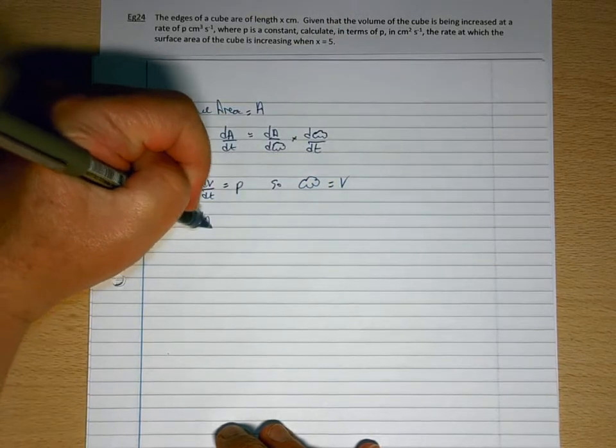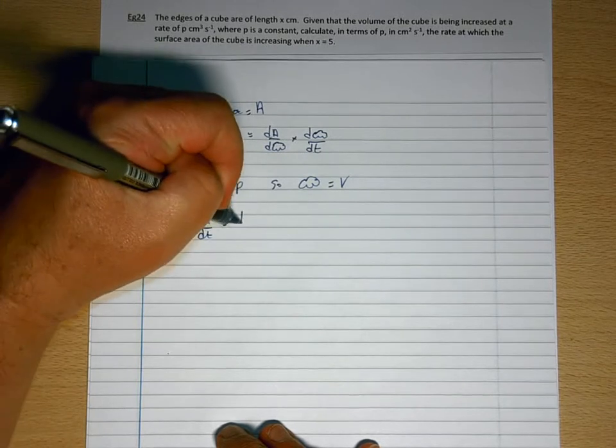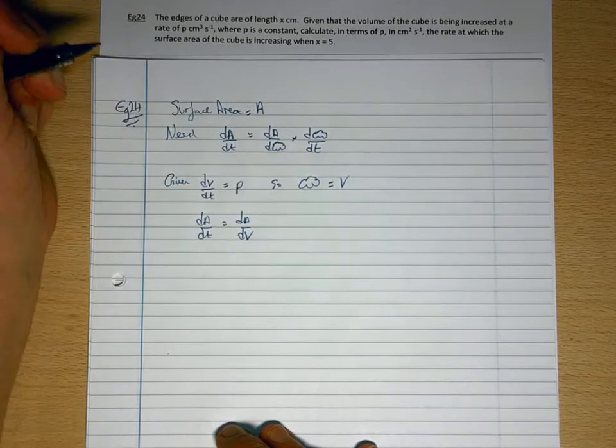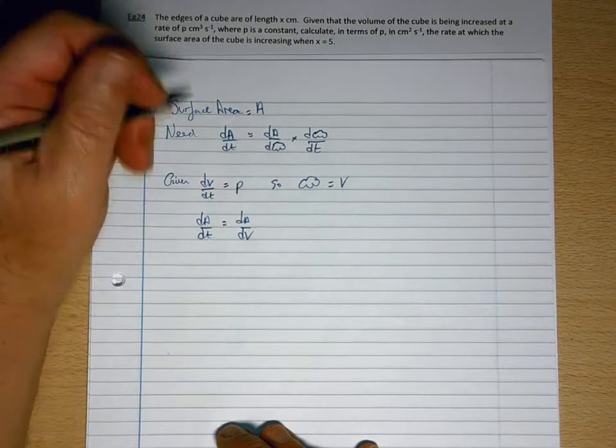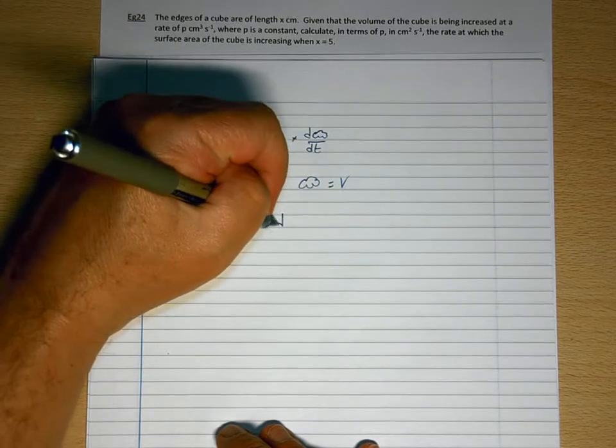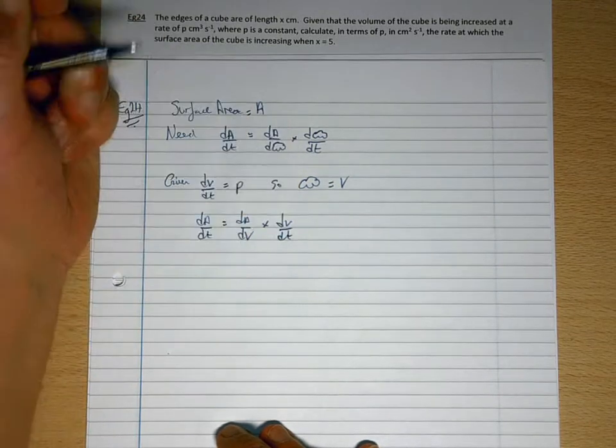So I have dA/dt equals dA/dV times dV/dt. So I've got dV/dt, I know it's p.